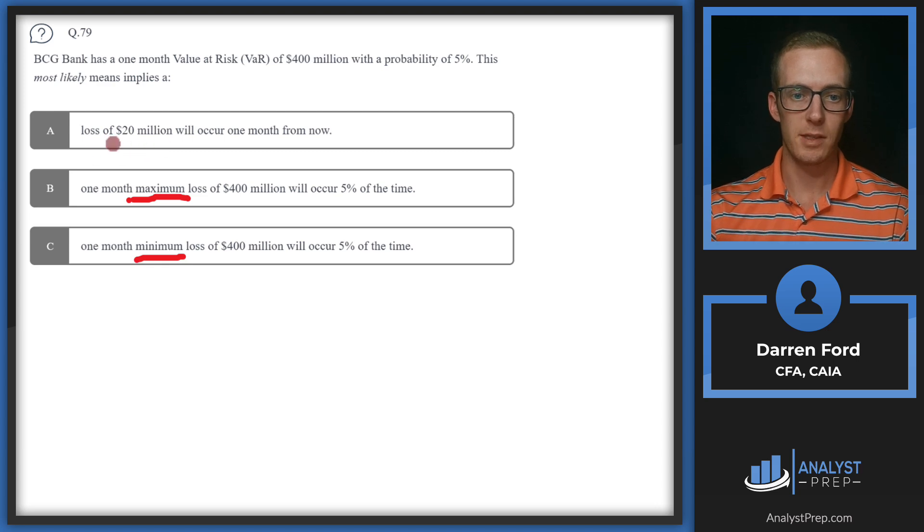VaR measures the minimum amount of loss expected for a given period at a given probability level. A is giving us too certain of an answer - it's just taking our $400 million times that 5% probability and saying this is what the loss will be one month from now. It's not taking into account the probability level. B is incorrect due to that maximum loss statement. As we said in the definition, it's going to be the one-month minimum loss that VaR is giving us for the probability level. So we'll go with answer C.